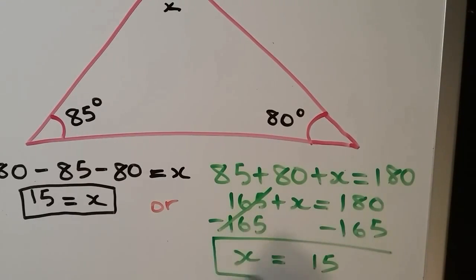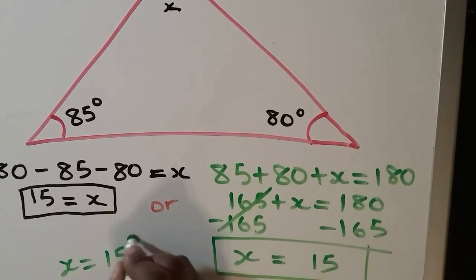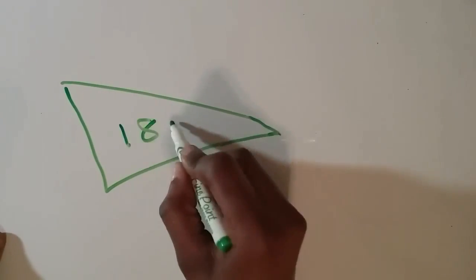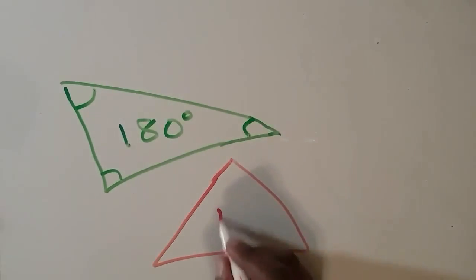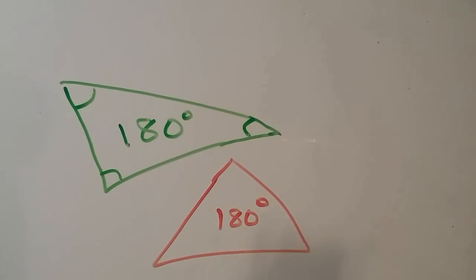Using both ways, we got 15 degrees as our answer, and I'll show you why in just a minute. When you add the inside angles of every single triangle on the face of the earth, you always get 180 degrees.